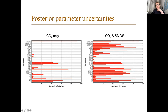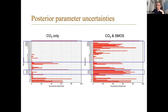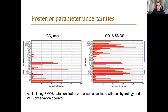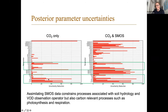Here you can see the uncertainty reduction in the parameters - that's a list of all the parameters we optimized. The parameters in the blue boxes are parameters regulating the soil hydrology and the empirical model for VOD. When we assimilate CO2 only, they do not get constrained - obviously, because we don't have the data for that. But when we add the SMOS data, we do actually constrain both the hydrology part and the empirical observation operator. In addition, the parameters in the green boxes - regulating the photosynthetic process and autotrophic respiration - we see that adding SMOS data also constrains these parameters.